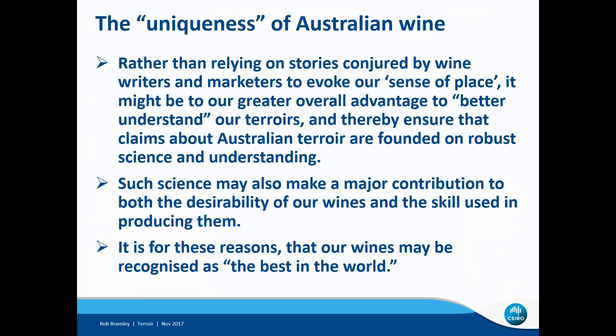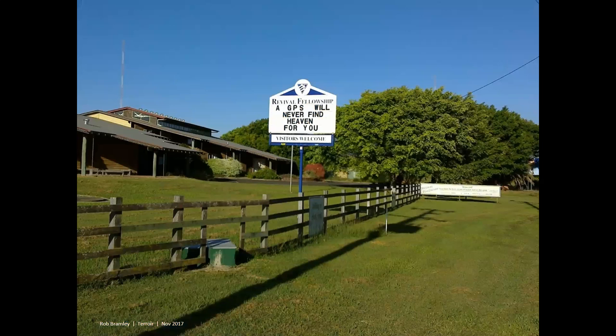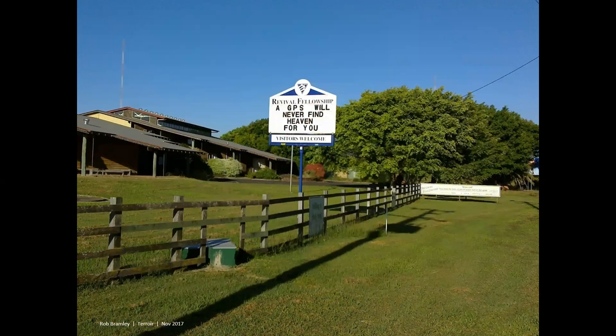Some of you will have seen this photo before — I took it whilst doing some sugarcane work up near Bundaberg. It's a church not far outside of Bundaberg where in their wisdom, they put up a sign saying 'A GPS will never find heaven for you.' I think for a whole range of reasons, it's pretty difficult to disagree with that sentiment. I can tell you that since I took this photo, the church has closed down — you can draw your own conclusions as to why that might be. Whilst a GPS might never find heaven for you, I've got no doubt that it might well help you to much better understand your terroir, and as a consequence, hopefully produce a more heavenly wine.